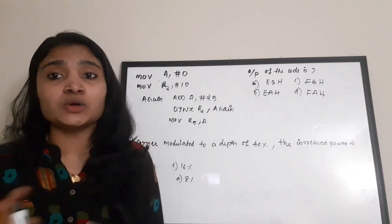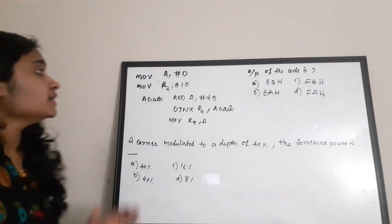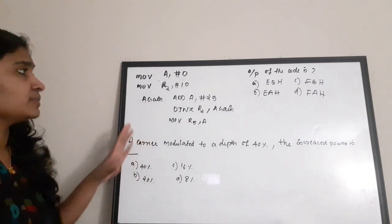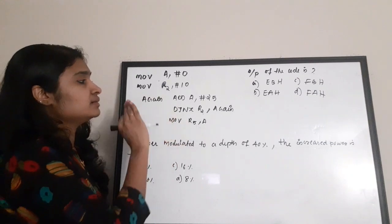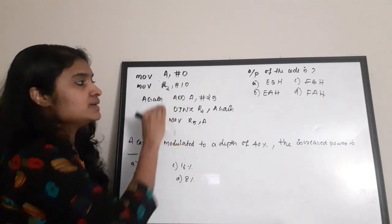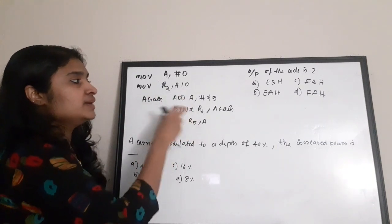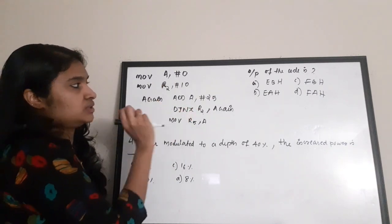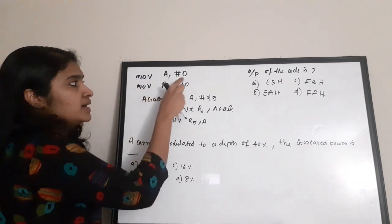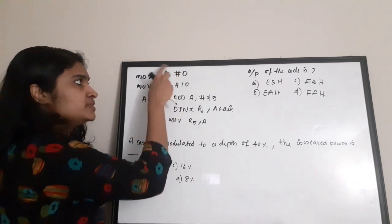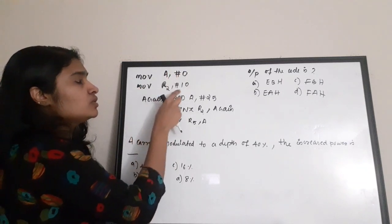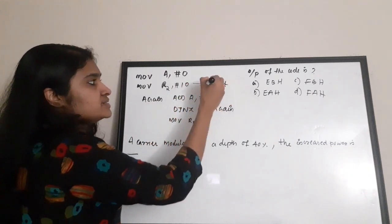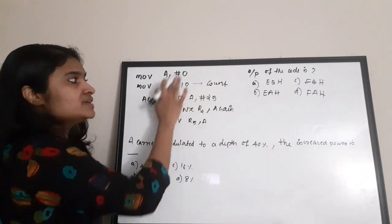The first question we are going to discuss today is assembly language programming — very simple programming. You just have to understand how the program is working. This is simply a loop in which an addition is performing and this loop is running with a count. 'Move A, hash 0' — simply a 0 is being loaded to A. Then 'Move R2, hash 10' — this is the count register and the count is 10.